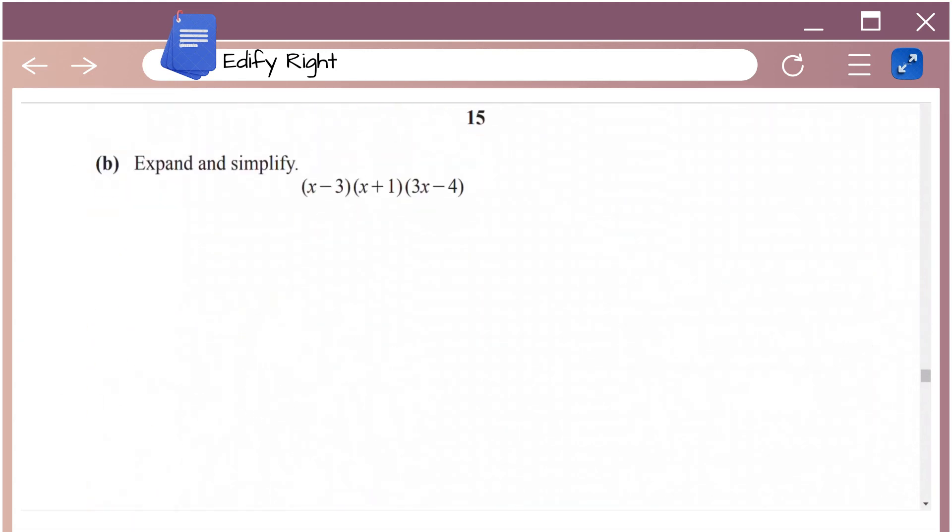Next we have expand and simplify x minus 3 into x plus 1 into 3x minus 4. So just take one bracket at a time. Let's expand x minus 3 and multiply it with x plus 1 first. So that would be x square plus x minus 3x minus 3. We're going to keep 3x minus 4 as it is for now.